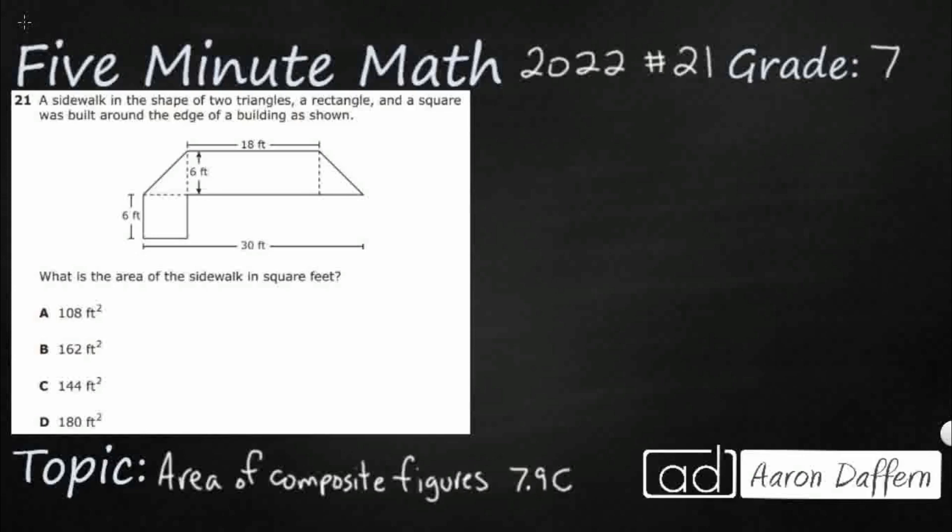Hello, and welcome to 5-Minute Math. Today we are looking at the 7th grade concept of area of composite figures. This is standard 7.9c in the great state of Texas, and we are using item number 21 off the 2022 released STAAR test. If you have not done so already, please go ahead and take a moment to pause the video, work this problem out on your own, unpause it, and we will look at our answers together.